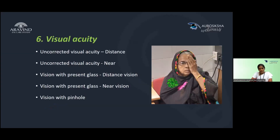Step 6 is visual acuity examination. First measure uncorrected visual acuity for distance, then uncorrected visual acuity for near. If the patient has glasses, check corrected distance vision and then near vision. If visual acuity does not improve to 6/6, use a pinhole.